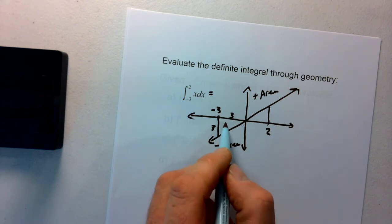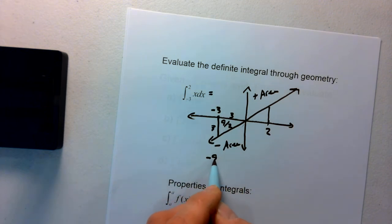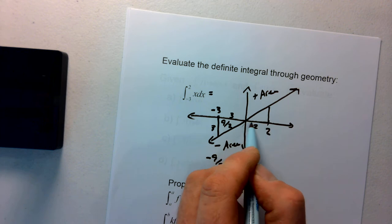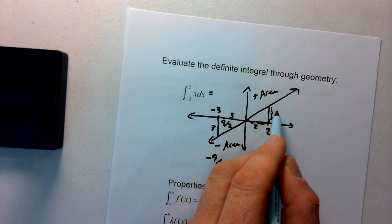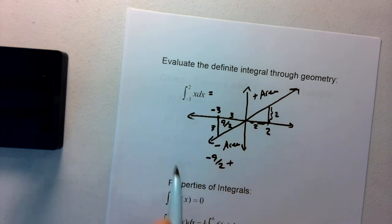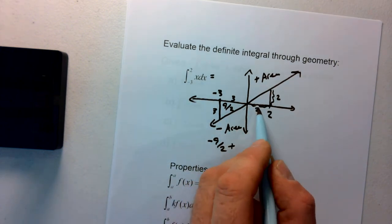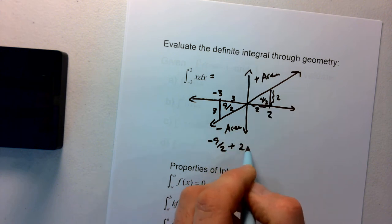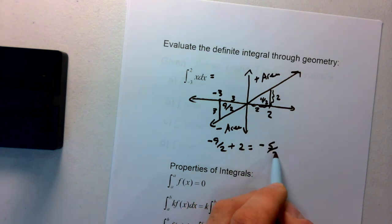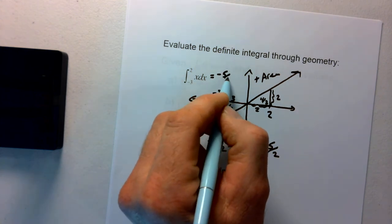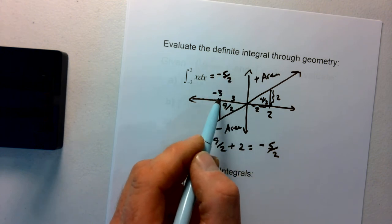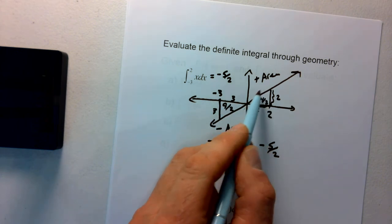Notice we've created two triangles. The triangle from -3 to 0 is 3 by 3, giving area nine-halves, but it's negative: -9/2. Then from 0 to 2, the base is 2 and the height is 2 (since f(2)=2), giving area = (1/2)(2)(2) = 2. So we have -9/2 + 2 = -5/2. This tells us there's more area below the x-axis than above, which makes sense since we went 3 units negative but only 2 units positive.